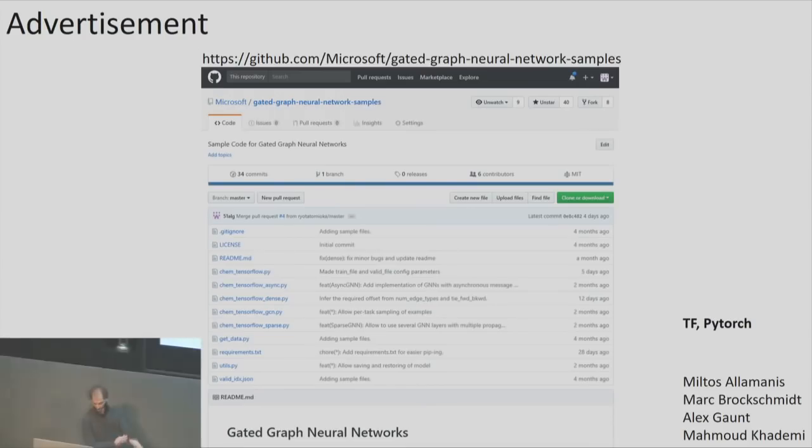One big objective I have is to advertise the fact that we have released very efficient implementations of graph neural networks on GitHub. So there's the link there. And people have already, so our code is in TensorFlow, but people have already started to convert it to PyTorch and things, or your favorite framework. So if you want to try out some of the things I discussed today, there's this GitHub, you should get yourself over there.